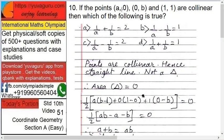What will be the area of the triangle? As the points are collinear, means they are in a straight line, it means that area of the triangle will be zero. To watch the videos further, kindly download Yuvaguru app from Play Store and follow the paid version.